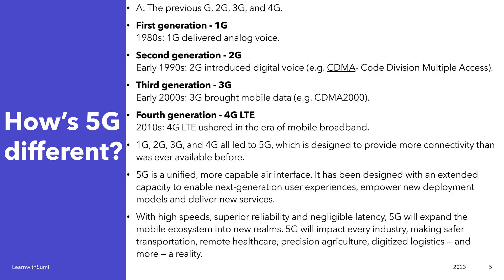How is 5G different? While 5G offers many advantages, its rollout also comes with challenges such as infrastructure cost, concerns about health and radiation, and the need for new hardware that supports 5G. The previous generations evolved as follows: first generation came out in the early 1980s and delivered analog voice. Second generation came in the 1990s with digital voice — for example, CDMA (Code Division Multiple Access) devices.